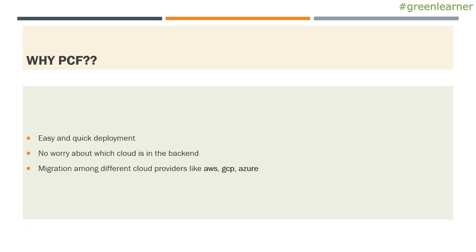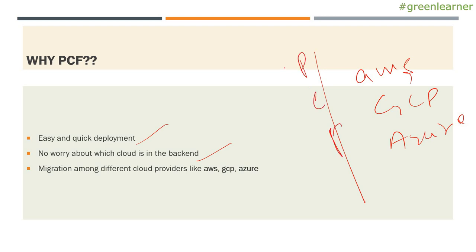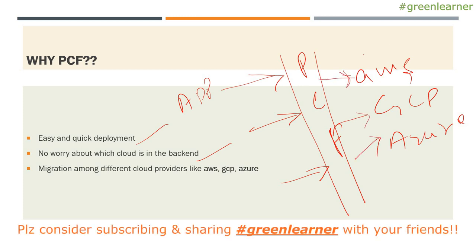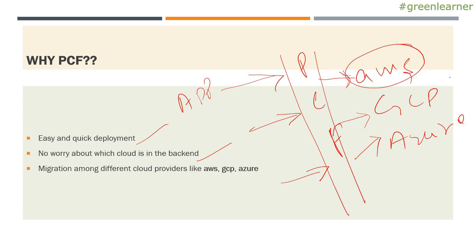So why PCF? Why should we go for this when we have AWS, GCP, and all other cloud service providers? As already explained, this is easy and quick deployment with no worry about which cloud is in the backend. If you have AWS, GCP, or Azure on the backend and PCF in front, you push your application to PCF and you do not have to worry about which cloud it is going to. Even if you are on AWS and want to move to GCP, that migration is really quick and without any data loss — that is managed by PCF. Migration among different cloud providers like AWS, GCP, and Azure is very easy when deploying through Pivotal Cloud Foundry.